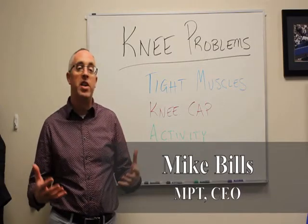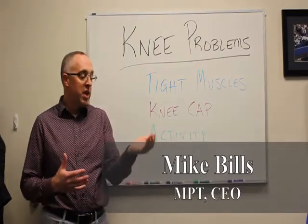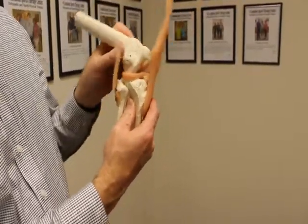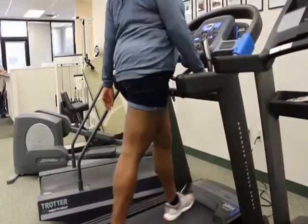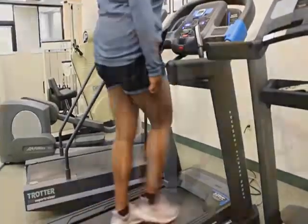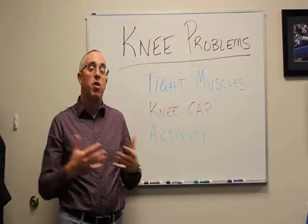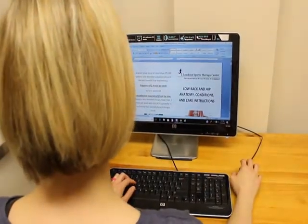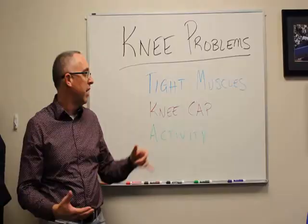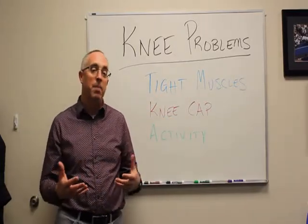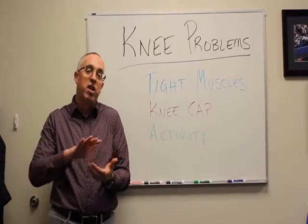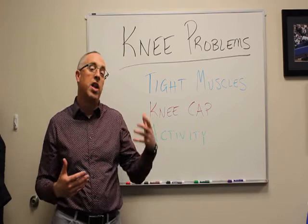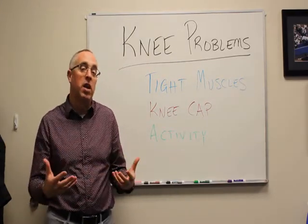Another problem that causes knee issues is how your kneecap tracks. Your kneecap is a bone — like a rock tracking up and down in a tunnel in your upper leg bone. When we're walking, bending and straightening our knees, going up and down stairs, or sitting a lot — especially if you're working from home in a different chair, or with legs out straight and a laptop on your legs — that really changes the position of your kneecap, causing friction and pressure on its back surface where there are a lot of nerve endings.